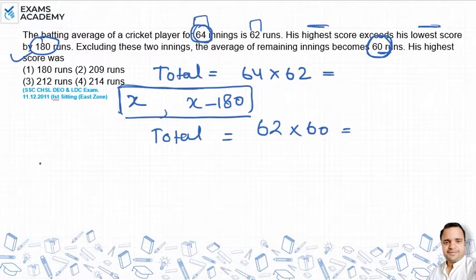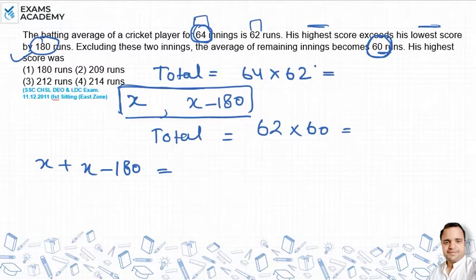So x plus x minus 180, which is equal to the first score? 64 times 62 minus...